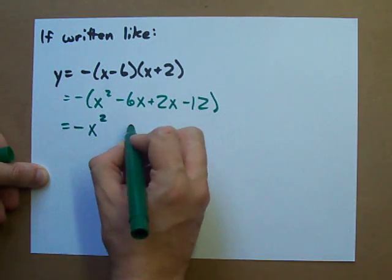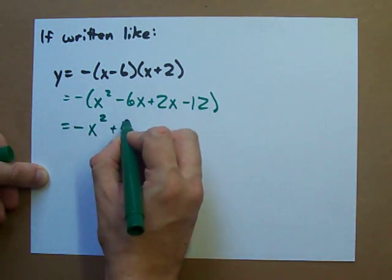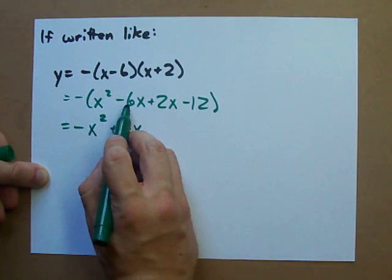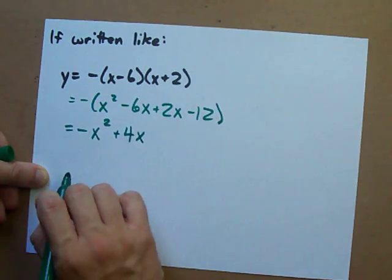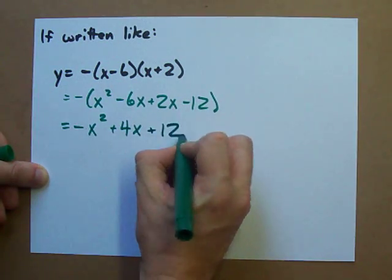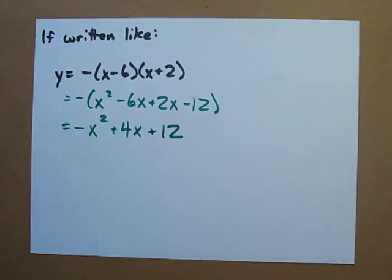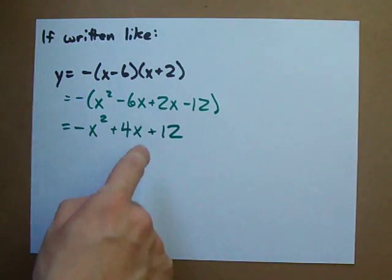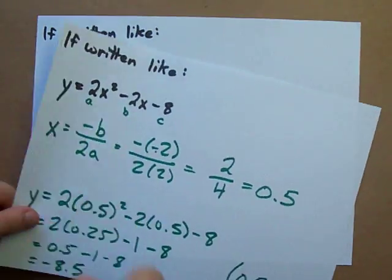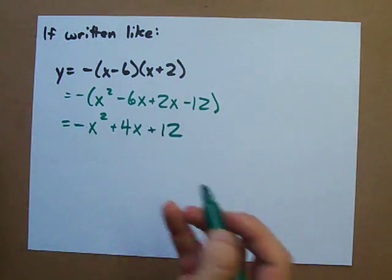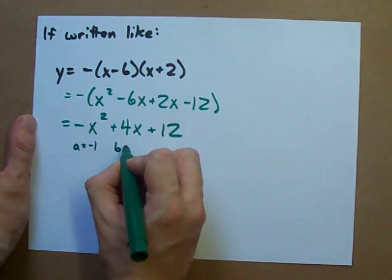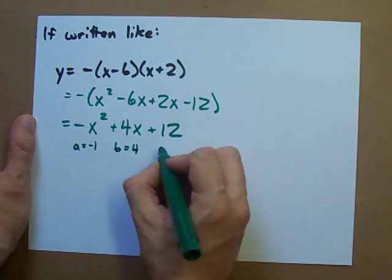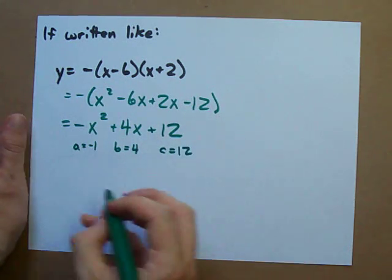Negative x squared plus 4x. Negative 6x plus 2x is negative 4x. But, we flip the sign. And, we have a minus 12, which becomes positive 12, because we flip the sign. Now, this is written just like it was in this standard form. a is negative 1. b is positive 4. c is positive 12.